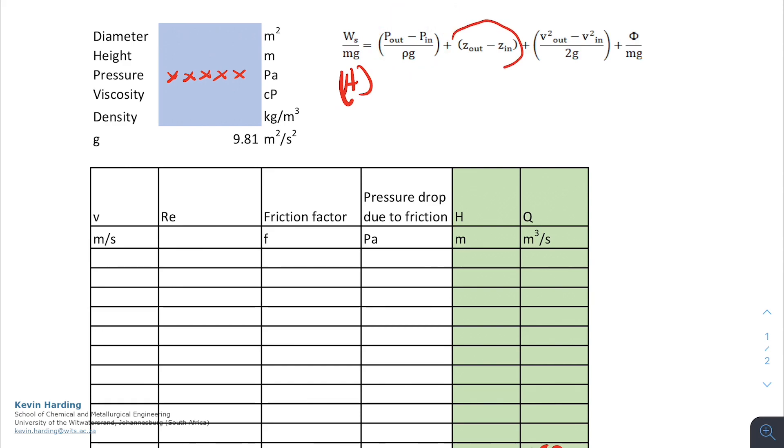In the same way, z out and z in is also going to be known, and that is also going to be a constant. In most of our equations, velocity squared out minus velocity squared in is going to drop down to zero, because the velocity out and the velocity in is going to be constant, so that will fall away.